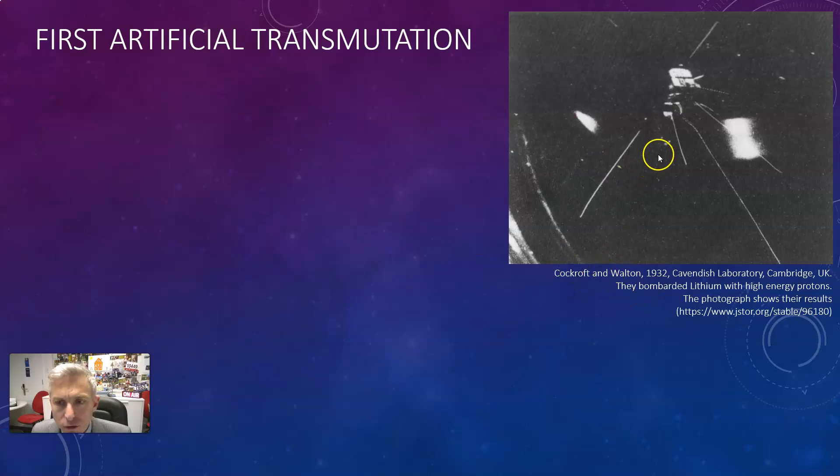Now this photograph taken by Cockcroft and Walton in the 1930s shows lithium being bombarded with a hydrogen ion so in other words a high energy proton. I think the proton comes down from above and two alpha particles are created so here's one and I think that might be another one.